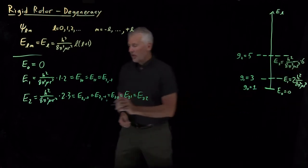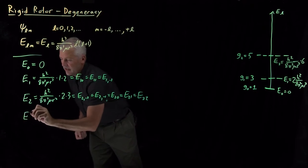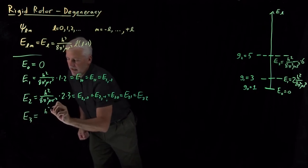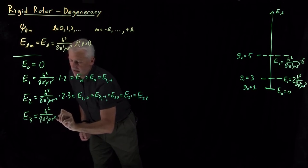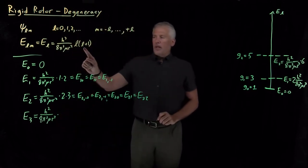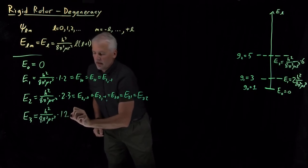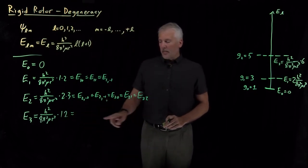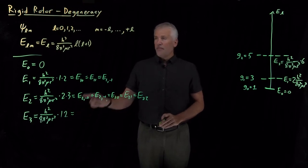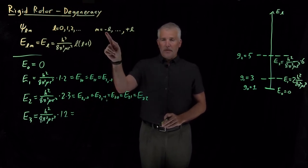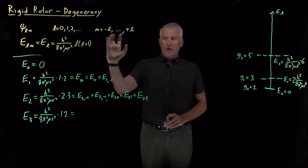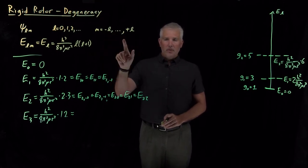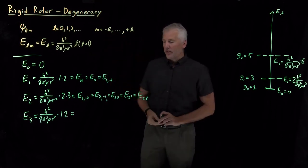One more, just to add one that we haven't seen yet. When L equals 3, three times four is equal to 12. And we can begin to see, instead of writing them all out, how many states there are that are going to have the same energy. When L is equal to 3, I could have negative 3 up through positive 3. So, negative 3, negative 2, negative 1, plus a zero, and then 1, 2, 3. So, there's seven different states.